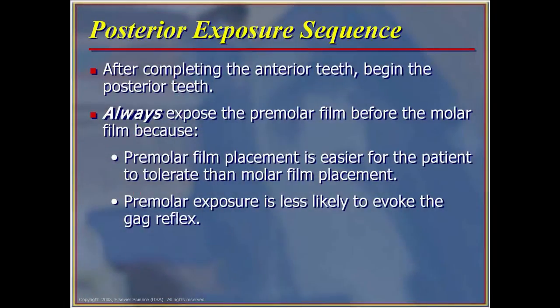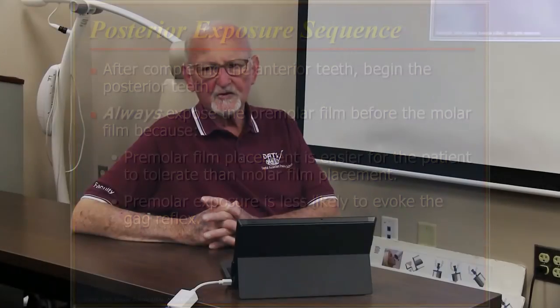After completing the anterior teeth, begin with the posterior teeth. Always expose the premolar film before the molar film because placement is easier for the patient to tolerate. Make sure that both the first and second premolars are always covered in the film — a common error is placing the film too far distally so that the first premolar, a critical area, is sometimes shortchanged. Cover the distal of the canine with the film or sensor to ensure that the first bicuspid or premolar is always included in the survey.